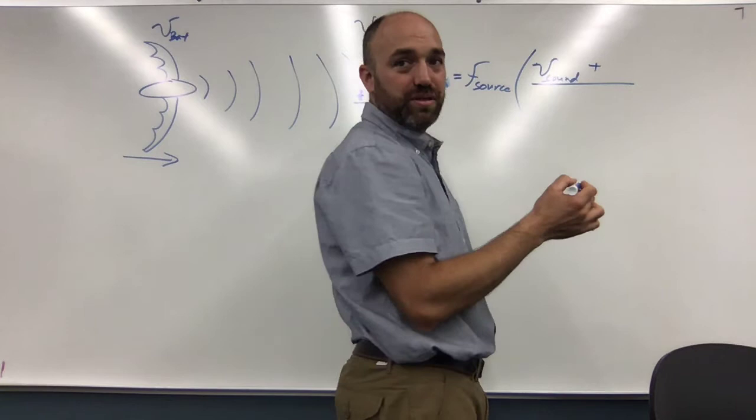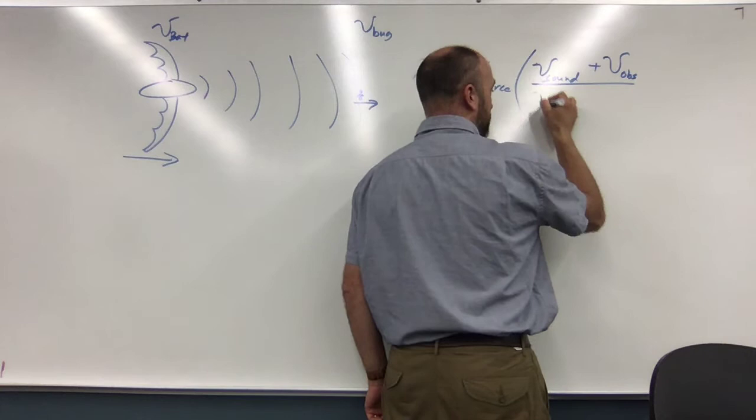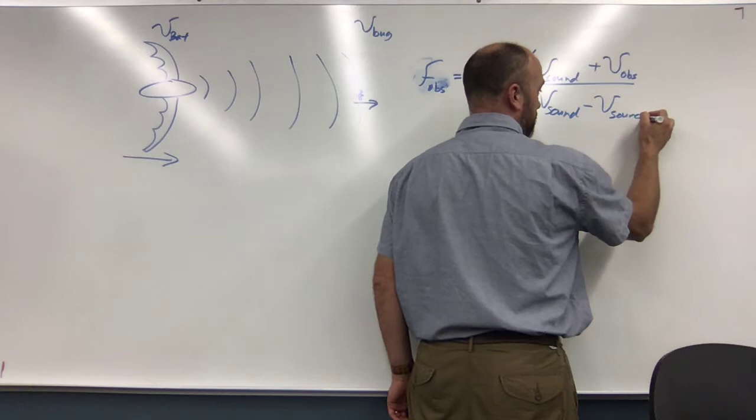I think it's plus upstairs and minus downstairs. It's plus the observer. Okay, it's plus speed of the observer. Minus on the bottom—v sound minus v of the source. Is that right?